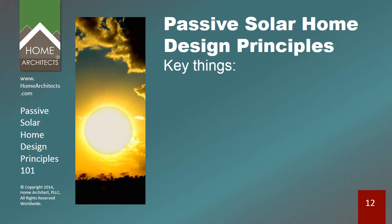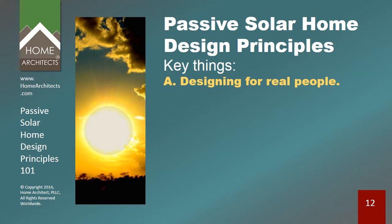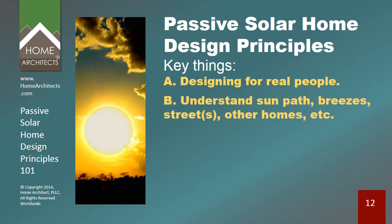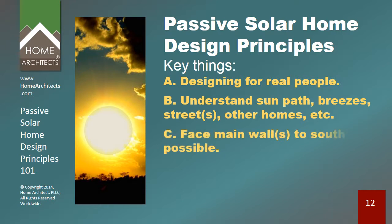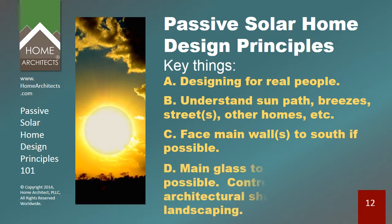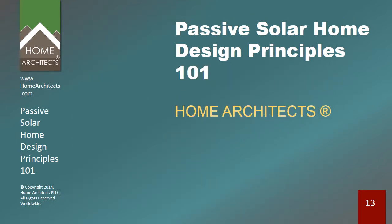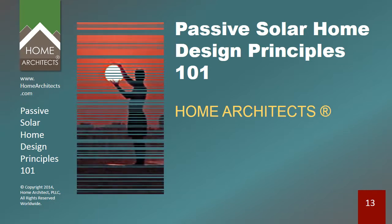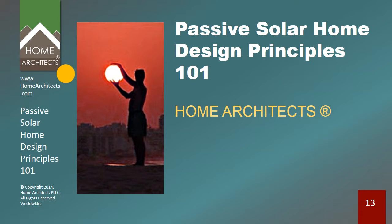So there are several key things involving passive solar home design. Designing for real people — this is something that you don't just take off the Internet; it needs to be very carefully programmed to make sure that the considerations needed for a specific client are handled. Next, you need to understand the specifics of the sun path, breezes, streets, and other homes and activities and environmental features, both natural and man-made, so that you can respond to those with your design. Next, face the main walls to the south if at all possible, and put the main glass also towards the south if possible. Control the sun with architectural shade devices. This has been Passive Solar Home Design Principles 101 by the Home Architects. If anyone has any further questions, you're welcome to contact me.